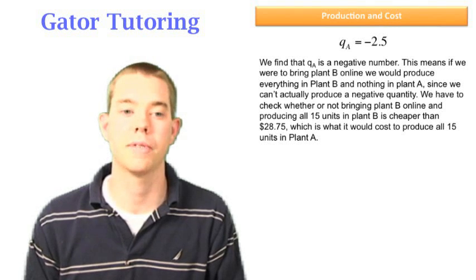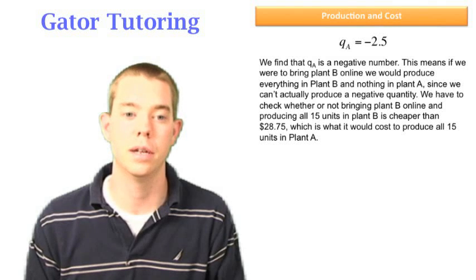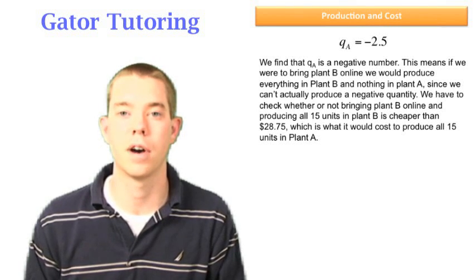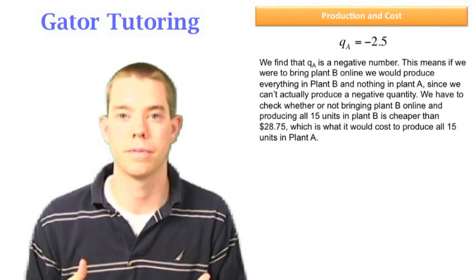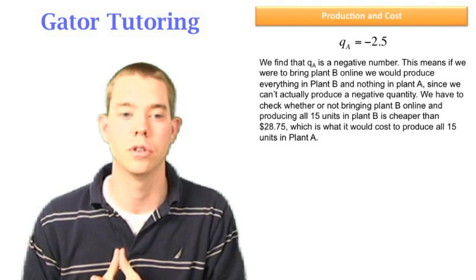That's what we need to do now. We have to check whether or not bringing plant B online and producing all 15 units in plant B is cheaper than $28.75, which is what we found it would cost us to produce all 15 units in plant A.